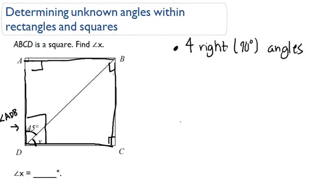So if I add up 45 and X, I know that's going to equal 90 degrees because squares have four right angles. So 45 plus X equals 90.